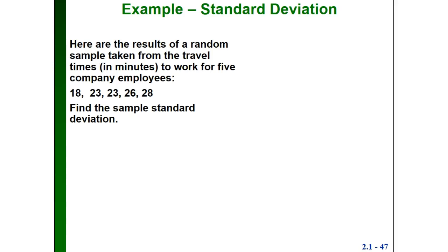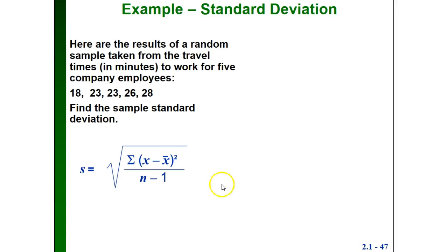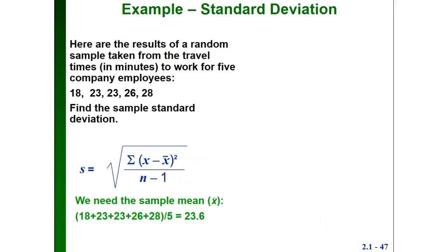We're going to do a quick example of calculating the standard deviation. I won't ever ask you to do this by hand, but I want to go through it so you can get an idea of what the standard deviation actually gives us. We've got five values and we're going to find the sample standard deviation, so we use the formula with n minus one. First we need the sample mean, which we find by adding the values and dividing by the number of values — that gives us twenty-three point six.